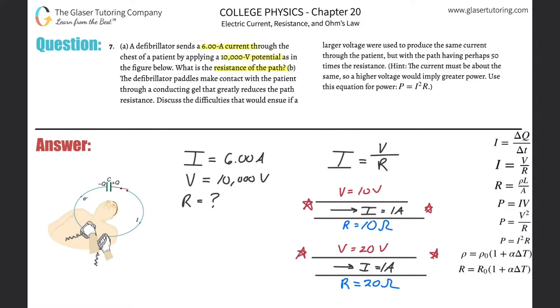But anyway, getting back to now this question. All I need to do then is kind of plug in these values. Again, the current flowing through a circuit is going to be equal to the potential difference between the start and end point, essentially, of that circuit, divided then by the resistance through the circuit.